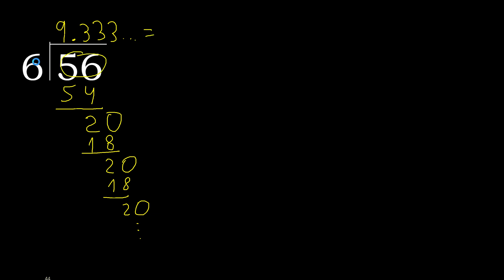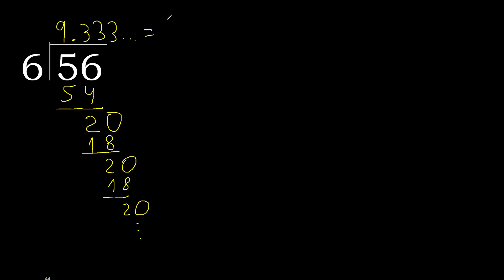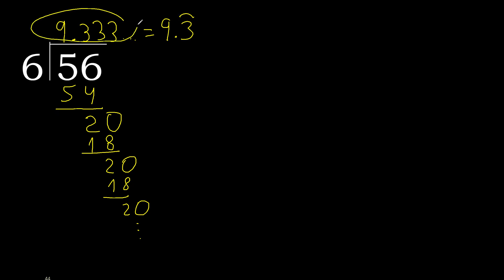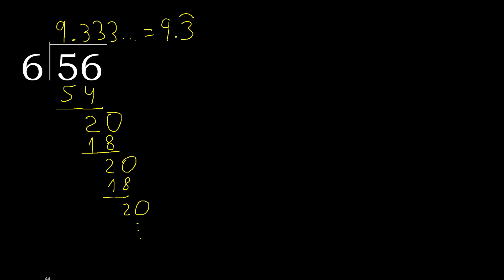56 divided by 6 is here: 9, and after the point, 3 repeat — therefore written as 9.3 repeating, like this. Or like this.